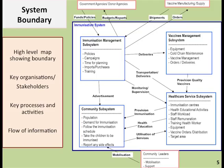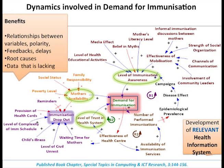From that, we were able to identify the key stakeholders, the key processes and activities, and the flow of information. Having come up with this system diagram, it was easy to know who to interview, where to find them, what else we needed to know, and who else to engage. We'll only show the dynamics involved in the demand side to illustrate the causal loop diagram. It can be very large, so it's better to split it into different sections focusing on different aspects.